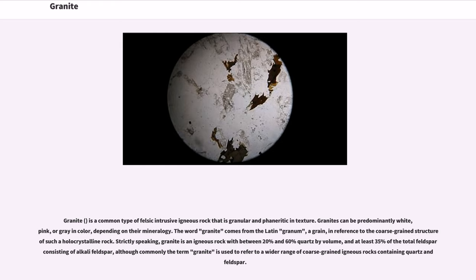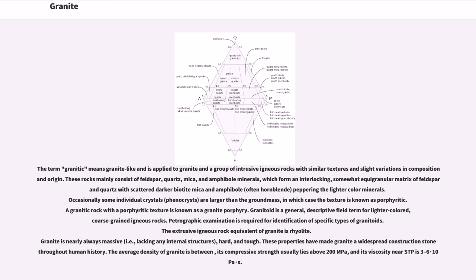Strictly speaking, granite is an igneous rock with between 20% and 60% quartz by volume, and at least 35% of the total feldspar consisting of alkali feldspar, although commonly the term granite is used to refer to a wider range of coarse-grained igneous rocks containing quartz and feldspar. The term granitic means granite-like and is applied to granite and a group of intrusive igneous rocks with similar textures and slight variations in composition and origin.